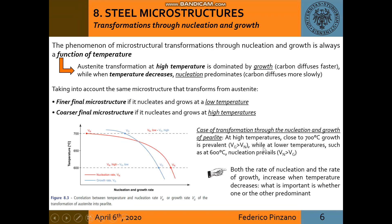One of the main important parameters of transformation through nucleation and growth is the temperature. At high temperature, growth is dominant, giving a coarser final microstructure. Instead, when temperature decreases, nucleation predominates, giving a finer microstructure. Remember that both nucleation and growth increase when temperature decreases — what is important is whether one or the other predominates.